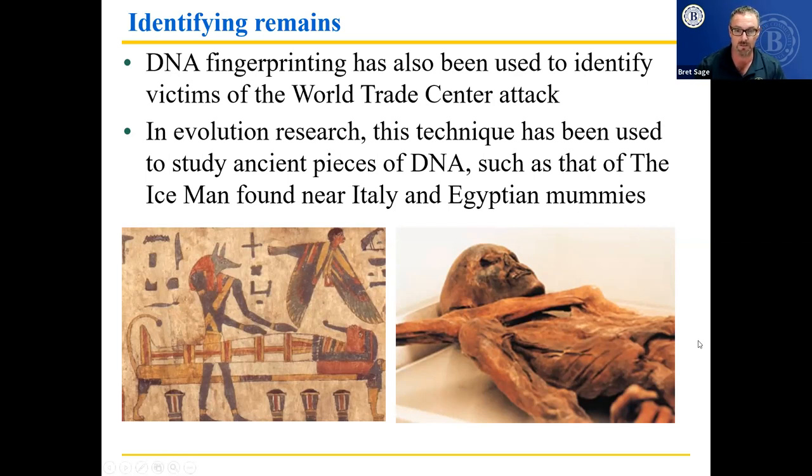In evolution research, the technique has been used to study ancient remains such as the Iceman found in Italy and Egyptian mummies. They were able to track down who the descendants of King Tut were using DNA found in his mummy. The Iceman found in the Alps had been dead thousands of years, and they were able to find out much about his DNA.